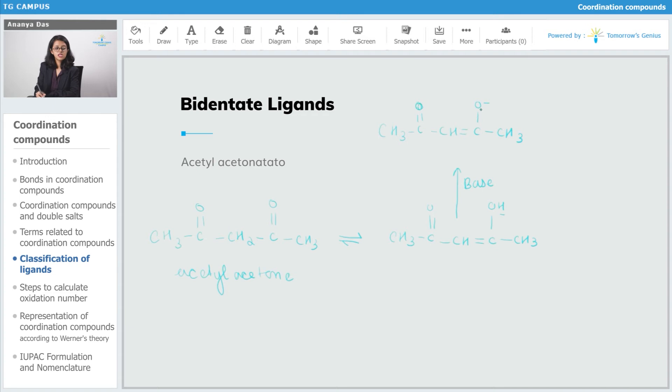Now, these two oxygen atoms are used for the binding with metal atom, thereby it is bidentate.